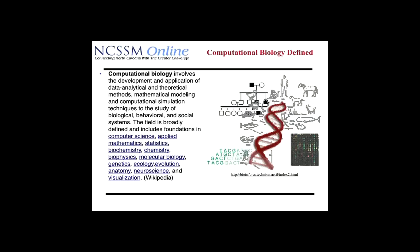We're using computational science, we're using mathematics, particularly statistics, we're using biology — and mostly what we're looking at here is genetics. If you ask most people what computational biology is, they're going to say the use of computing and mathematics, particularly statistics, applied to the field of genetics. And that's the way that I think about the term.